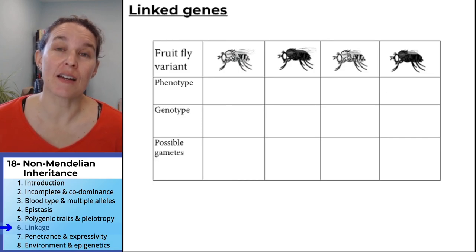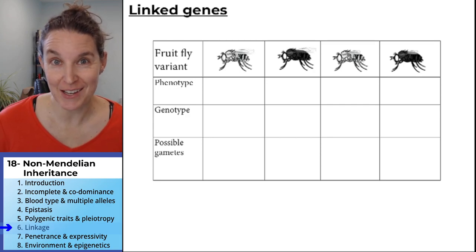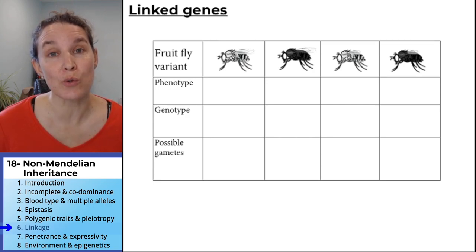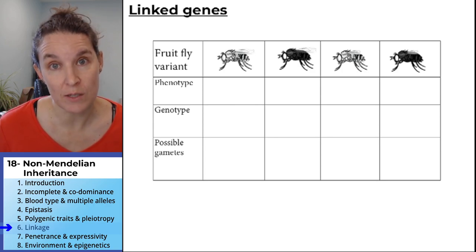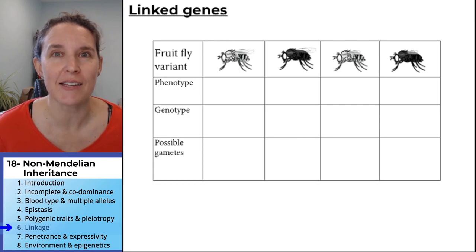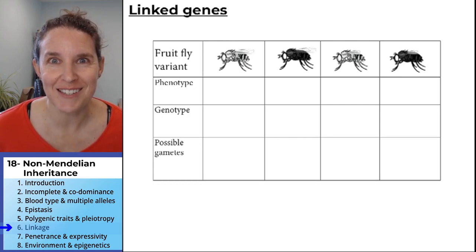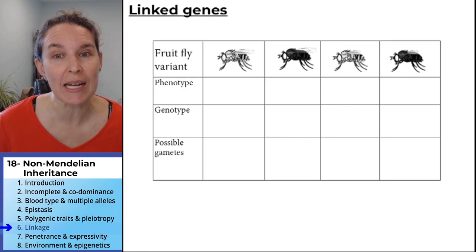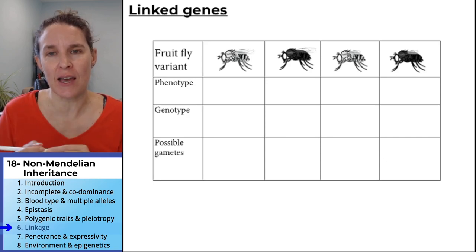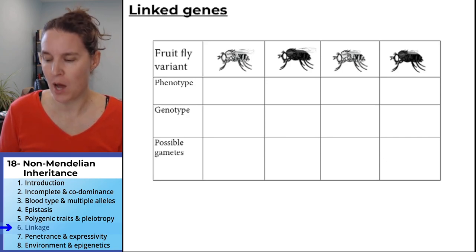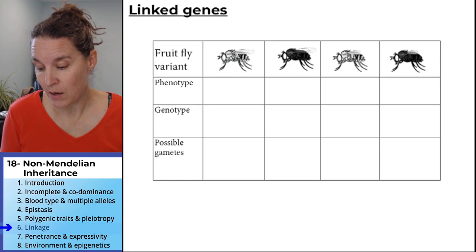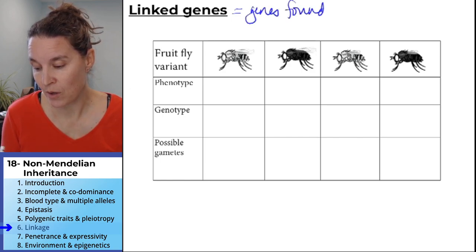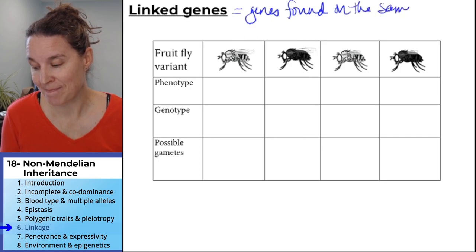The concepts in this lecture become more complicated as we go, so this idea is tricky. We're going to talk about two genes that are impacting fruit fly phenotypes. Linked genes are genes found on the same chromosome.